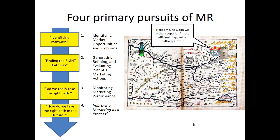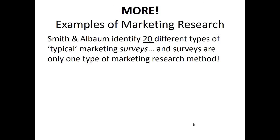The fourth primary pursuit of marketing research is to improve marketing as a process overall. If we understand and accept that marketing is actually a process — not just an art — marketing research, when integrating these first three primary pursuits, can help us improve our ability to conduct marketing research in a rigorous fashion. This isn't the only way to categorize marketing research. Smith and Albom, some of the founders of Qualtrics, categorize surveys into 20 different typologies, illustrating just how common and varied marketing research problems are.